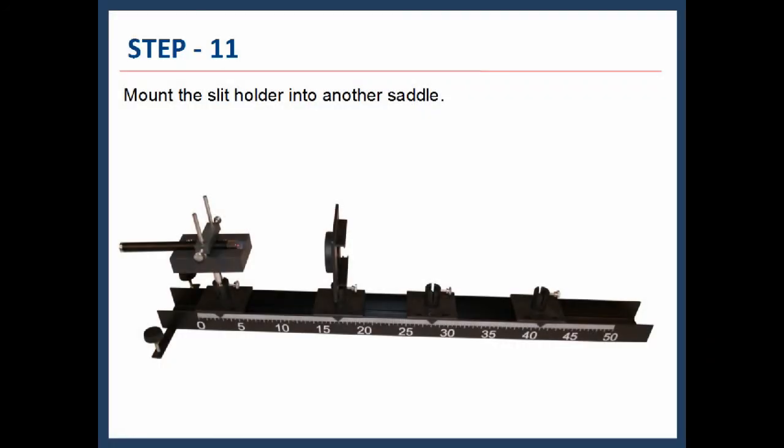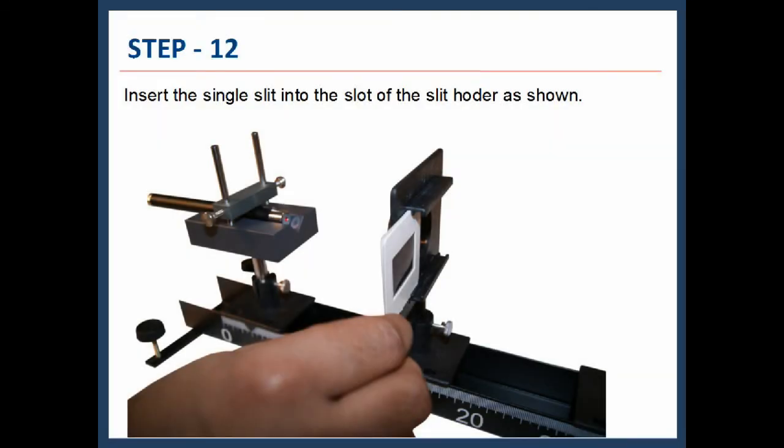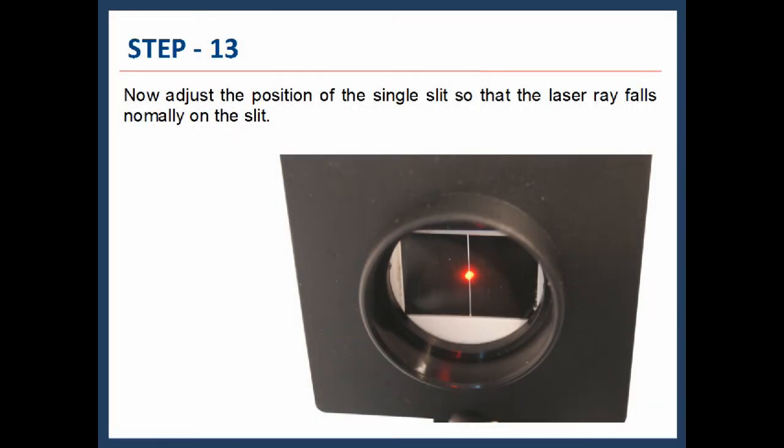Now press the upper central portion of the diode laser mount as shown, and simultaneously tighten both the side screws of the diode laser mount. As a result, the switch will be pressed and the laser will be on. Mount the slit holder into another saddle.